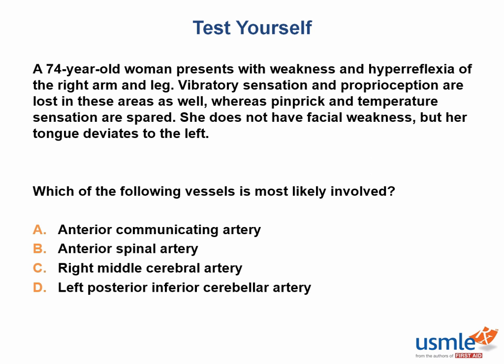Now let's do a test yourself question. A 74-year-old woman presents with weakness and hyperreflexia of the right arm and leg. Vibratory sensation and proprioception are lost in these areas, whereas pinprick and temperature sensation are spared. She does not have facial weakness, but her tongue deviates to the left. Which vessel is most likely involved? The answer is B, anterior spinal artery. The syndrome is medial medullary syndrome. Contralateral upper motor neuron pattern weakness, loss of proprioception and vibration below the neck, and tongue deviation are all signs of medial medullary syndrome. Then you just need to identify which vessel causes it — none of the other choices cause this syndrome.